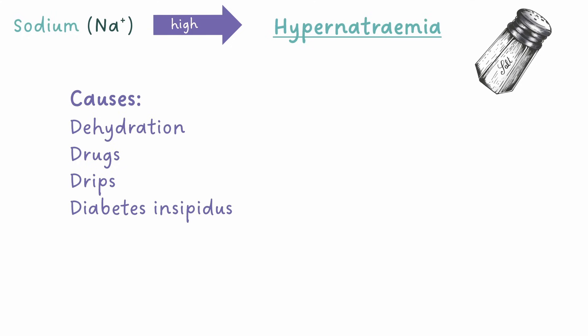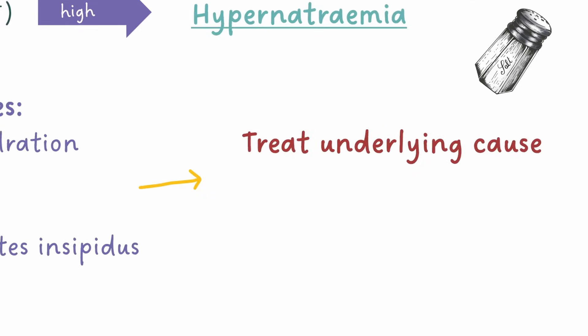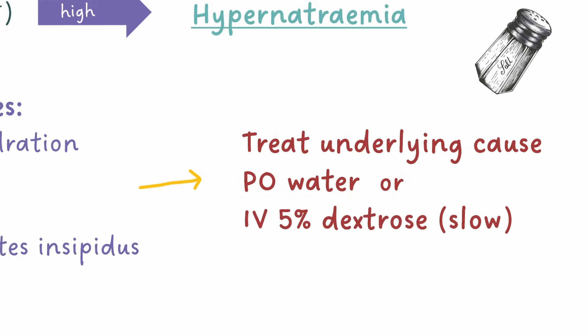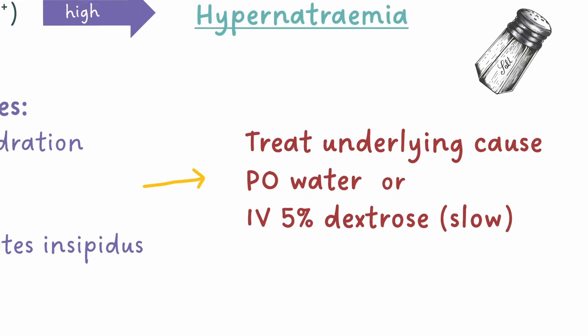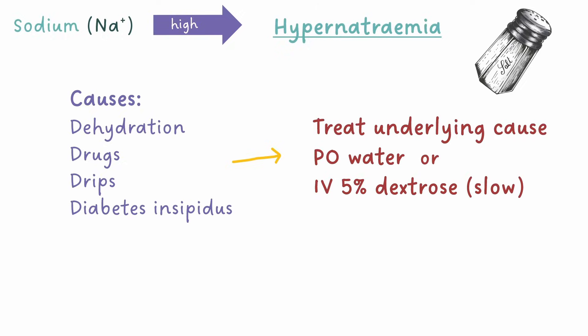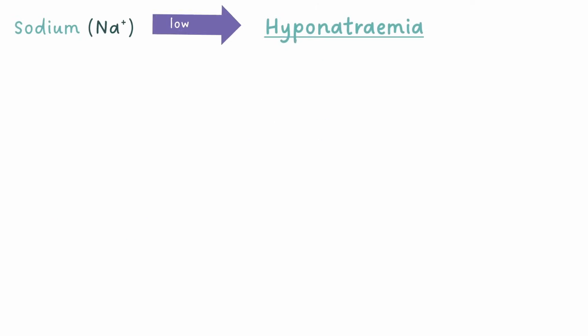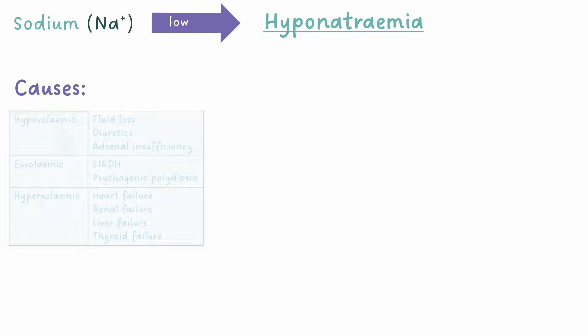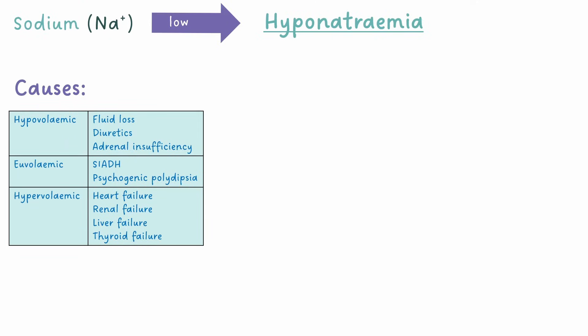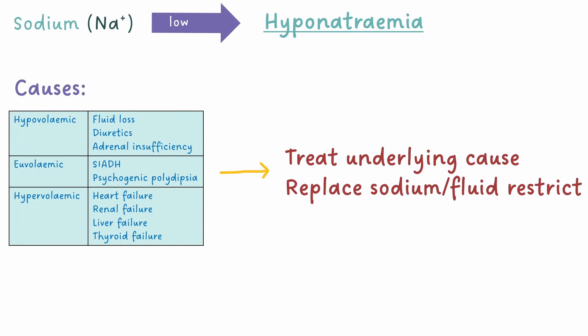For hyponatremia, we also need to treat the underlying cause, as well as rehydrating with fluid either orally or IV. It's important not to use saline IV, as this can further increase sodium. Causes of hyponatremia can be split into hypovolemic, euvolemic, or hypervolemic, depending on the fluid status of the patient. For these, we again need to treat the underlying cause. We can also replace sodium, or fluid restrict, to increase serum sodium concentration.